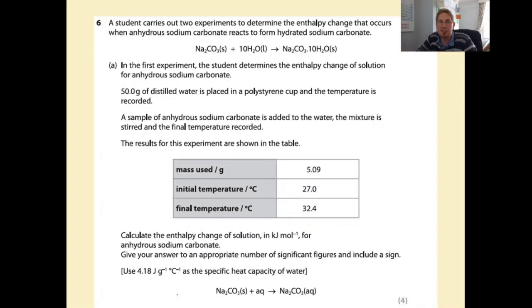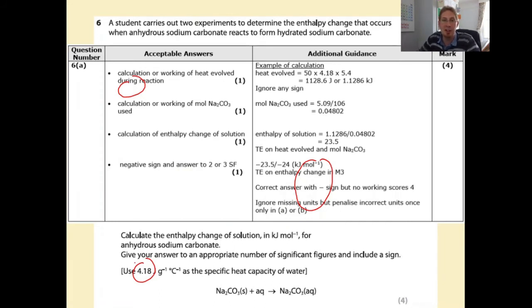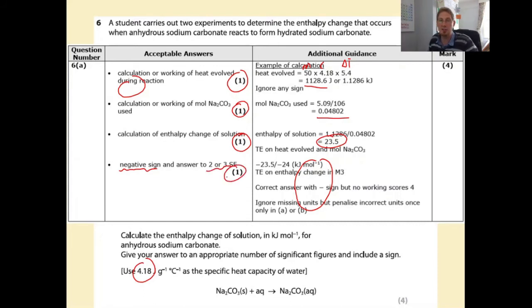A student carries out experiments to measure enthalpy change of solution for anhydrous sodium carbonate. All data is given to three significant figures, so answers should be to two or three significant figures. Calculate heat evolved: Q = mcΔT = 1128.6 J; calculate moles used; calculate enthalpy change of solution as Q/n = 23.5 kJ/mol with the negative sign. So minus 23.5 kJ/mol would have been the perfect answer.